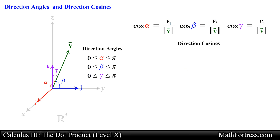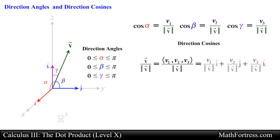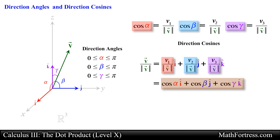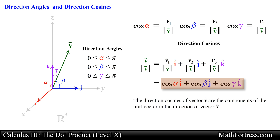Consequently, any nonzero vector v in space has the normalized or unit vector form denoted as follows. By substituting the components of the normalized form with the direction cosines, we obtain an alternative version of the normalized form of vector v. This expression says that the direction cosines of vector v are the components of the unit vector in the direction of vector v, and essentially represents the scalar projection of vector v along the unit vectors i, j, and k.